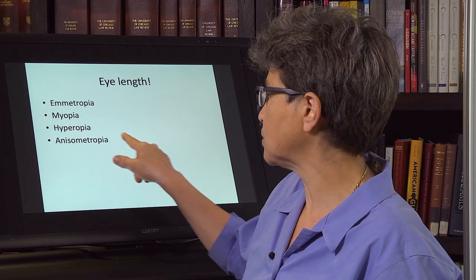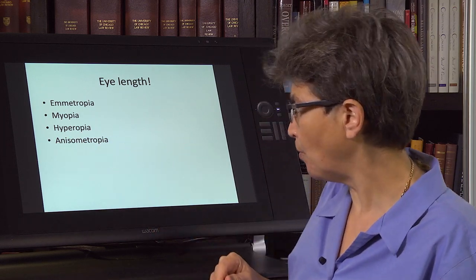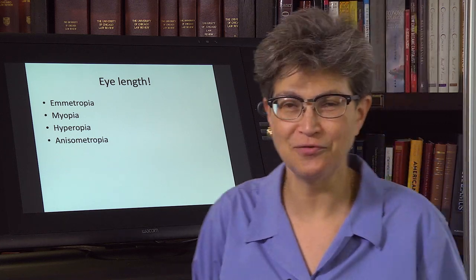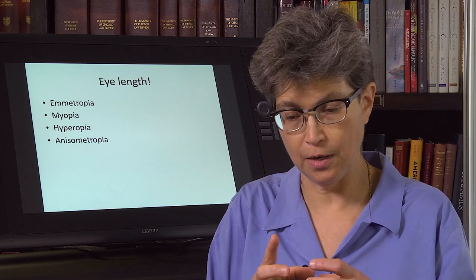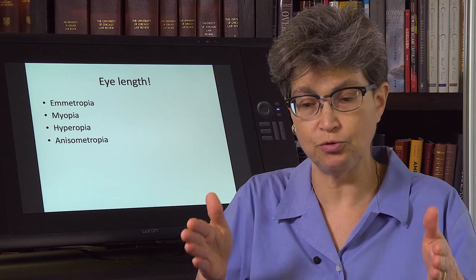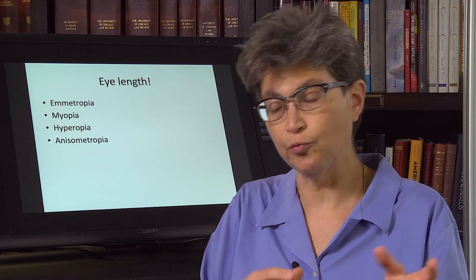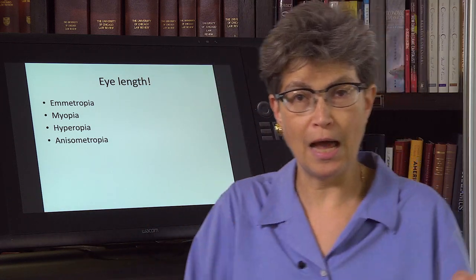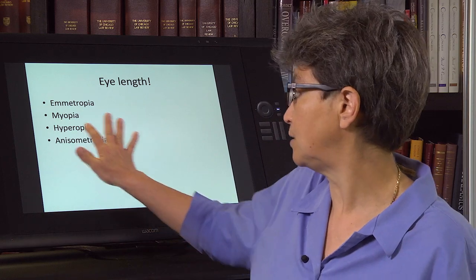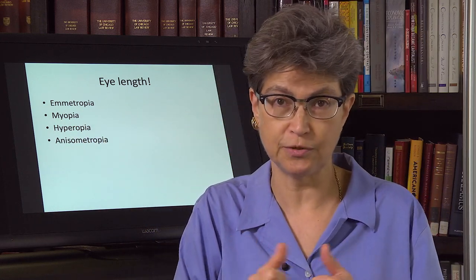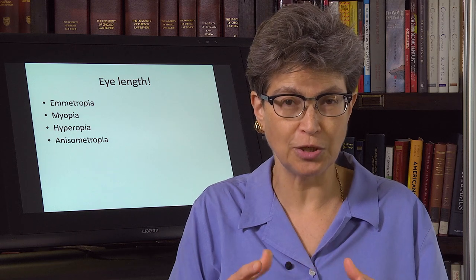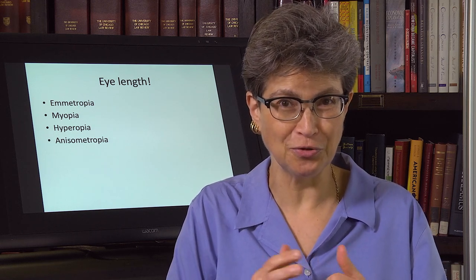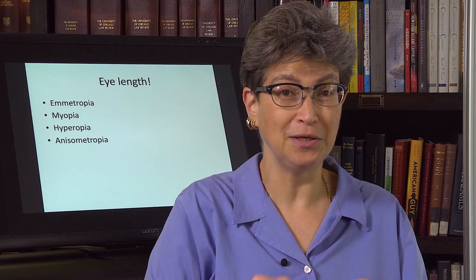Finally, one of the most common problems is something called anisometropia — when the two eyes are at different lengths. That's a big problem for individuals trying to develop a coherent view of the world. We'll come back to that when we talk about how a growing individual learns how to see, and the challenges that a difference in the two eyes' lengths presents for that. Eye length is critical to the neurobiology of seeing, and now we're going to jump into the nervous system and look at photoreceptors.